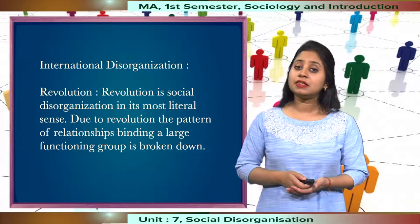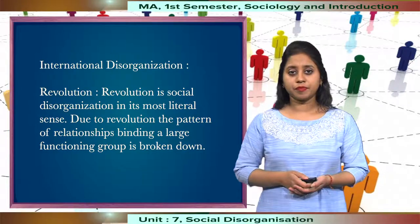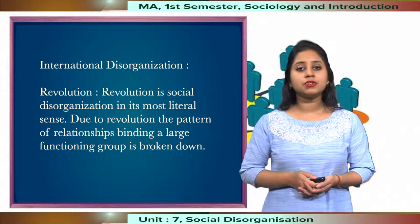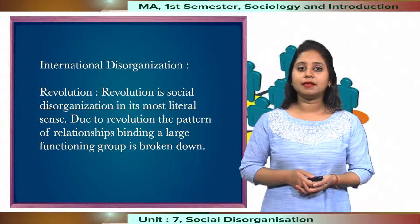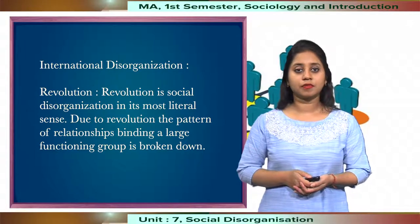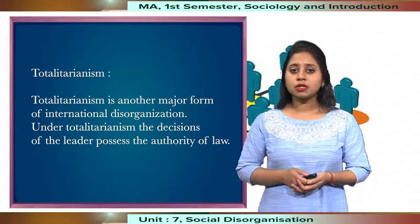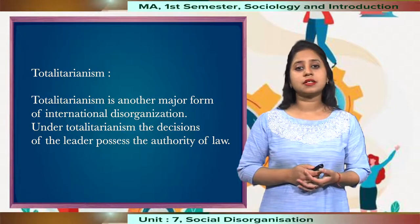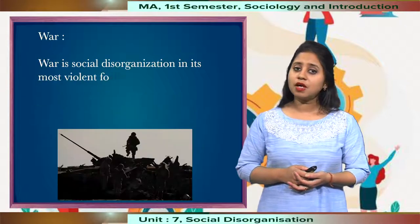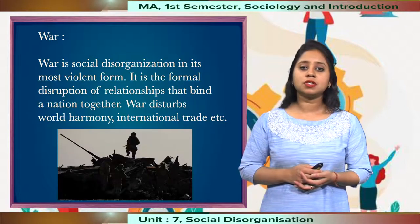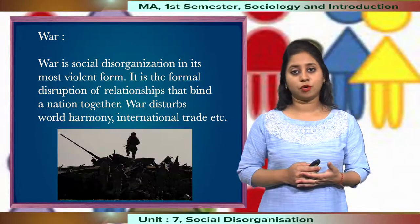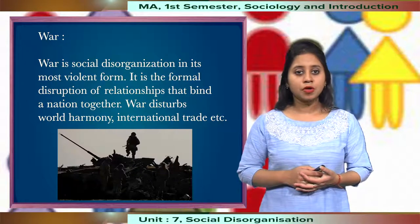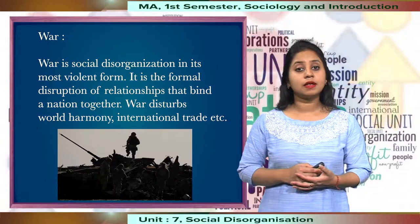Now let us discuss international disorganisation. Revolution is social disorganisation in its most literal sense — the patterns of relationship binding a large functioning group are broken. Totalitarianism is another major form, under which the decisions of the leader possess the authority of law. War is social disorganisation in its most violent form — it is a formal disruption of relationships that binds a nation together and disrupts world harmony as well as international trade.